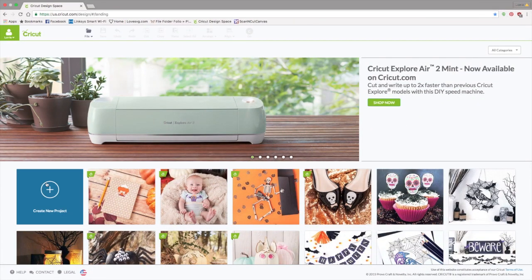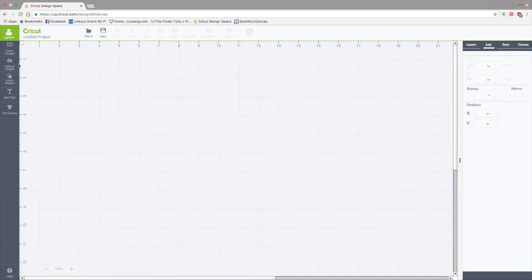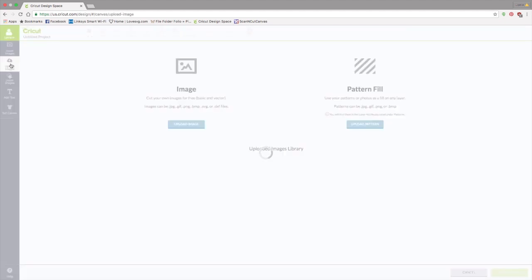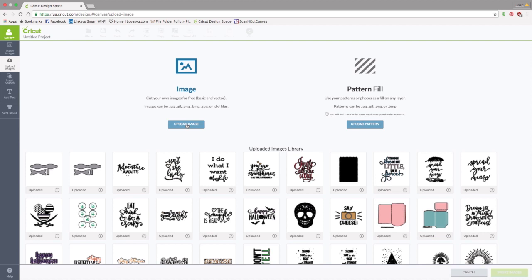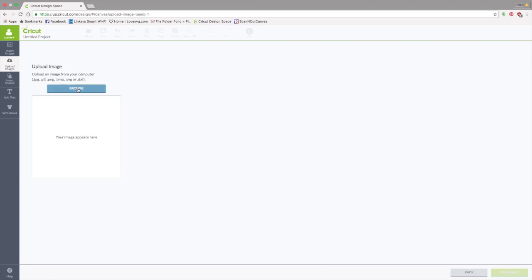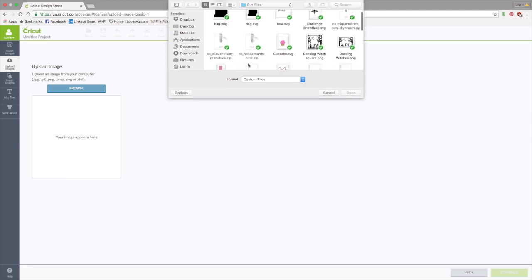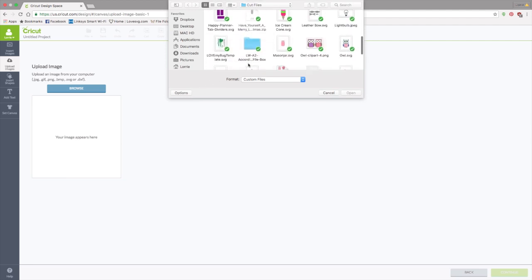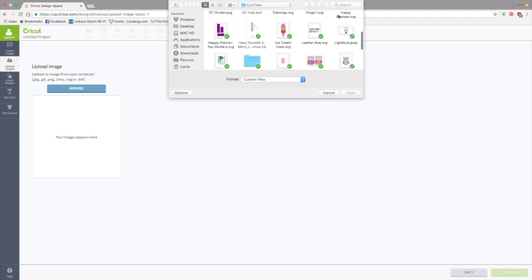The first thing we're going to do is create new project. We're going to click on upload images. Click on upload image. Browse. You're going to navigate to where you saved the file that I made for you. It's called leatherbow.svg. And for me, it's right here in my Dropbox. And we're going to click open.